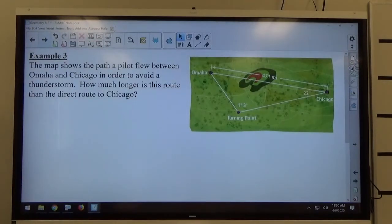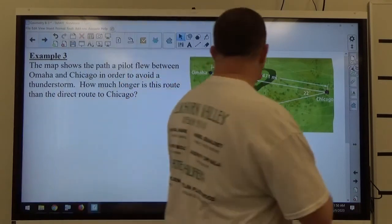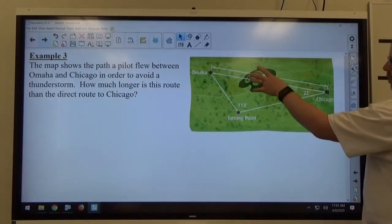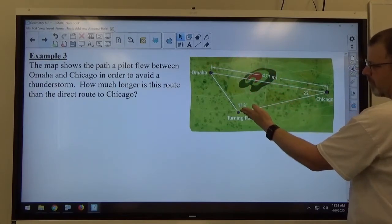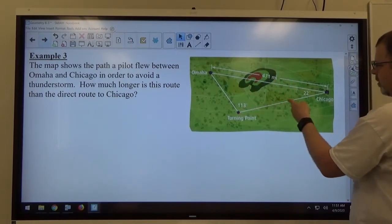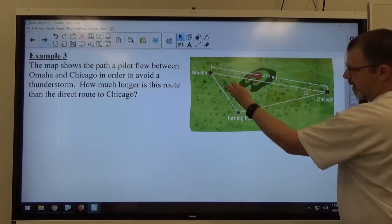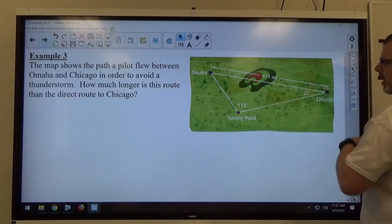Map shows the path a pilot flew between Omaha and Chicago in order to avoid a thunderstorm. How much longer is this route than the direct route to Chicago? So here's Omaha, here's Chicago, there's the storm. The pilot could fly straight through the storm, but he decided I'd rather go this way, south of the storm, and then turn here. So the plane is actually flying here and then turning there, getting to Chicago.